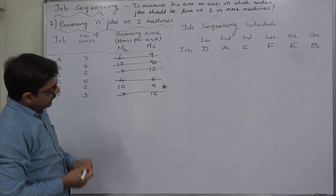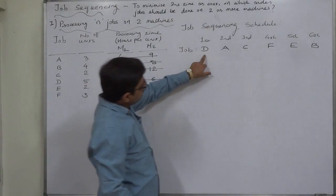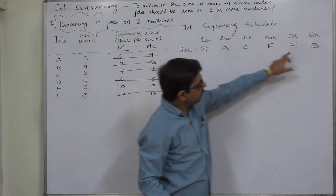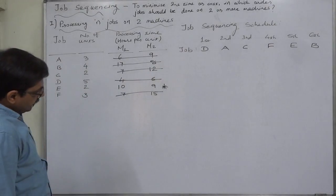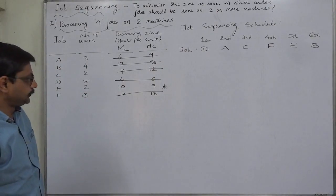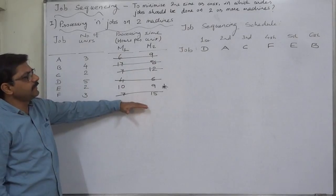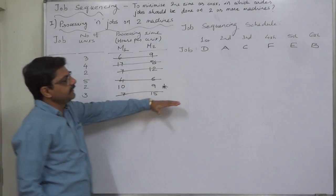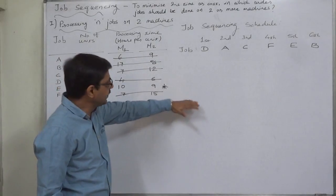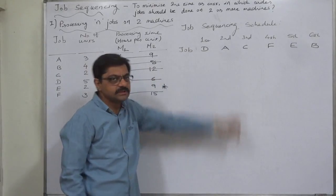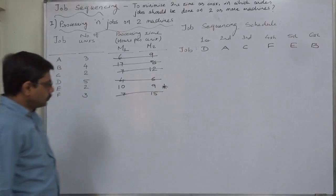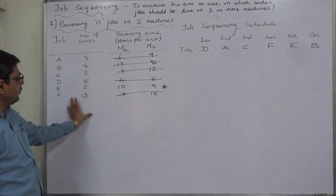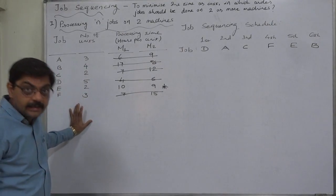So in this way, in the order D-A-C-F-E-B, we are going to perform all these jobs. Now the next step is to prepare the statement of total time elapsed—minimum total time elapsed—according to this job sequencing schedule or this suggested schedule of jobs.